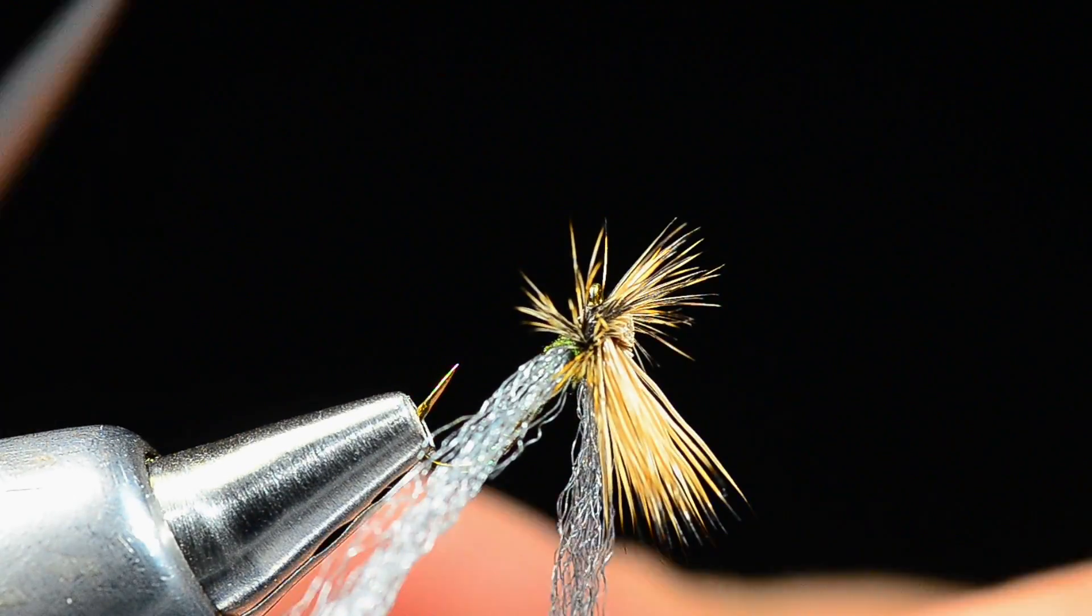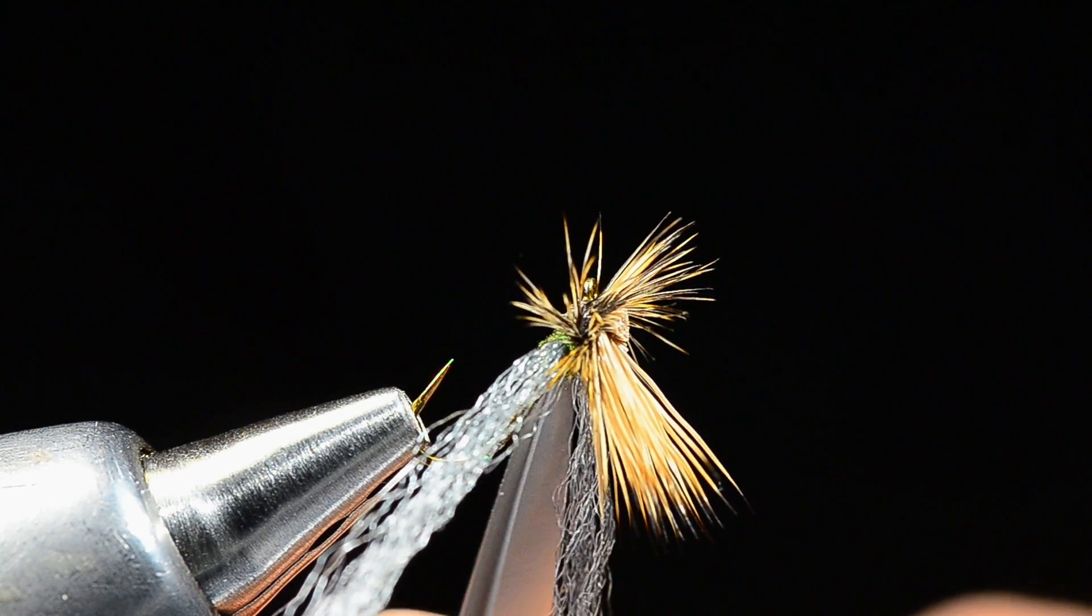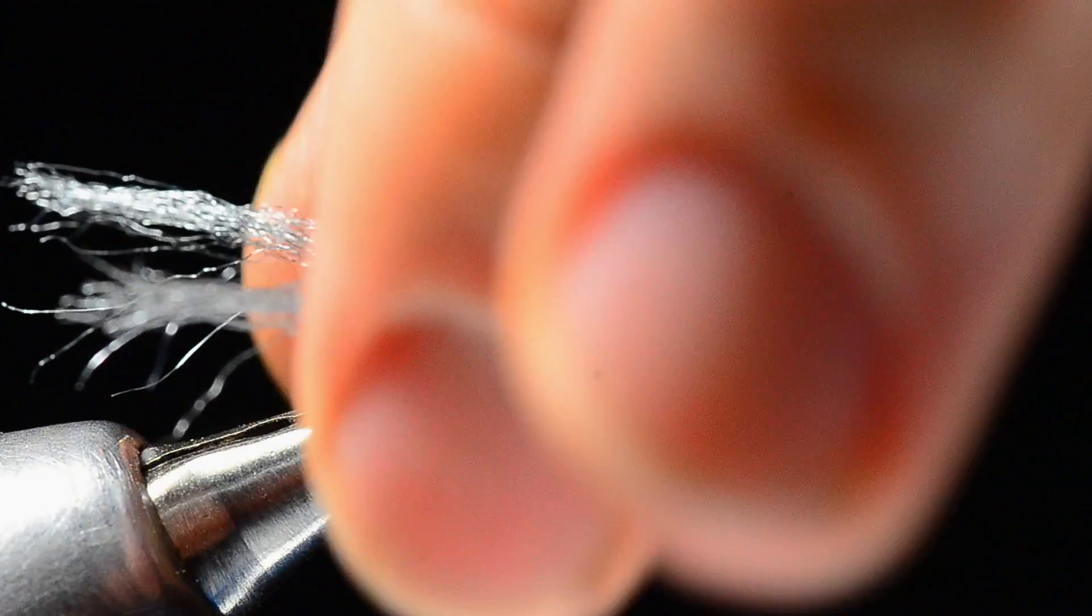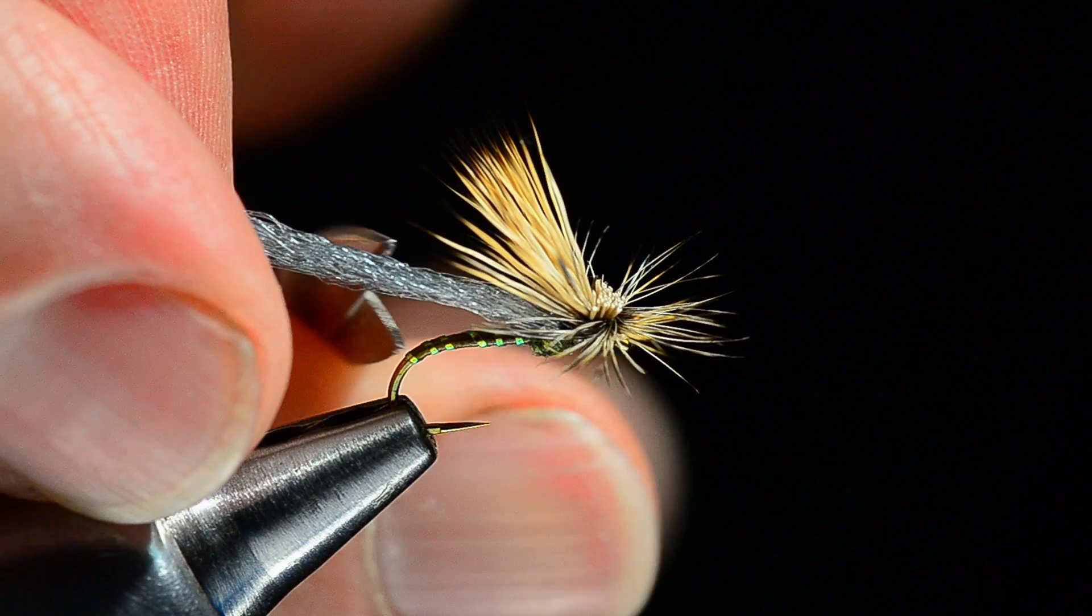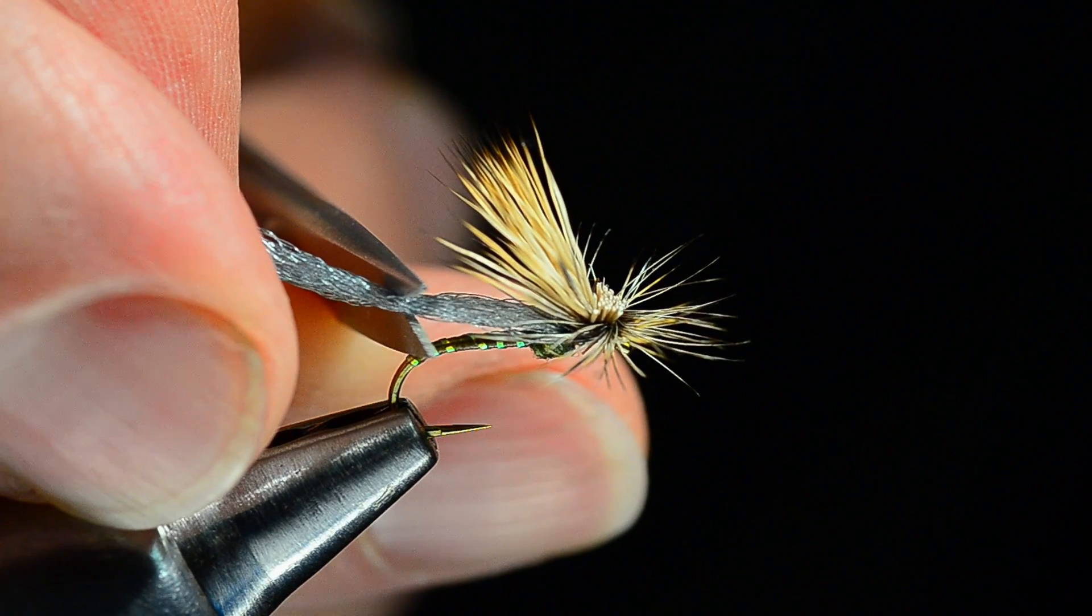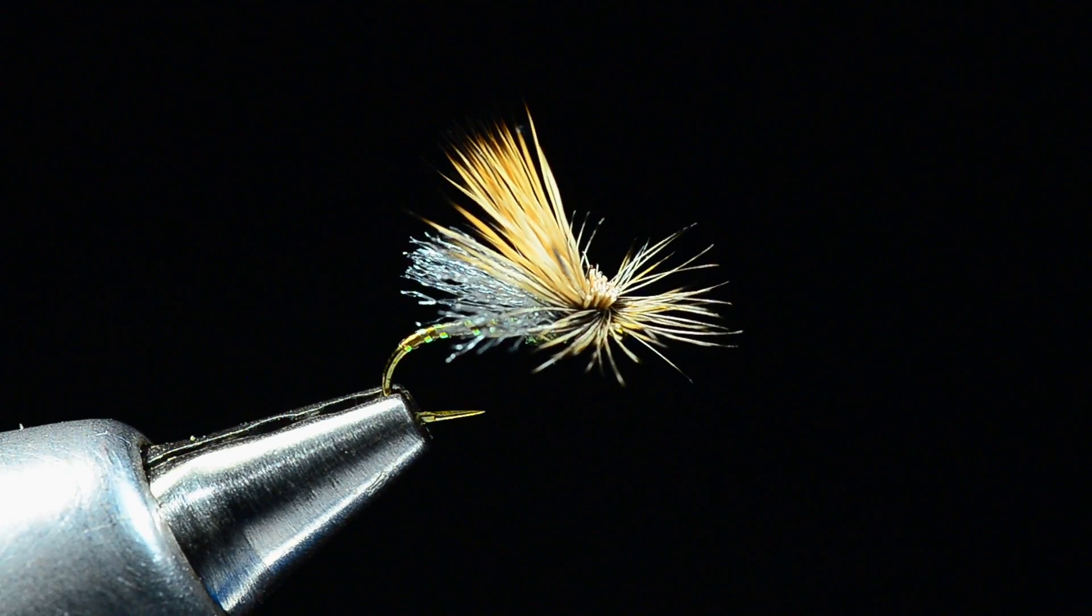Anything that's facing too far down I'll trim out, and then I'm going to trim these spent wings just here at the bend of the hook and try to keep them fairly square.